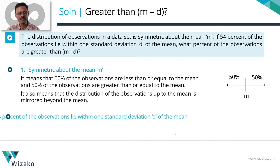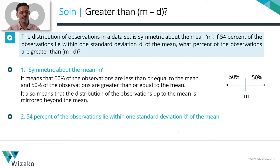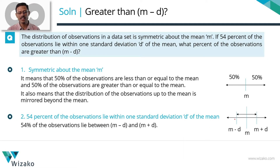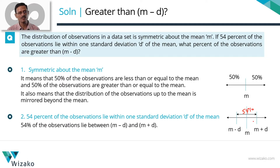Moving on to the second part of the data: 54% of the observations lie within one standard deviation of the mean. One standard deviation of the mean refers to observations that lie between mean minus deviation and mean plus deviation. So 54% of the observations lie between mean minus deviation and mean plus deviation.